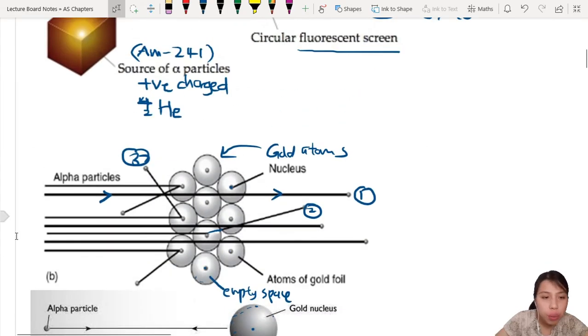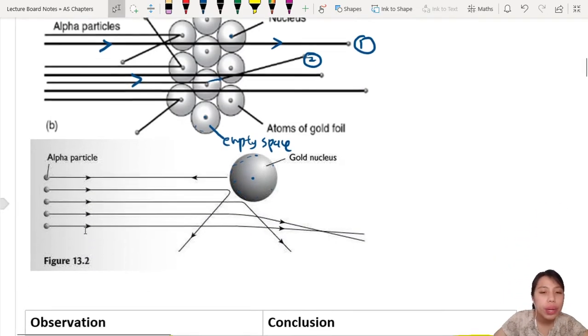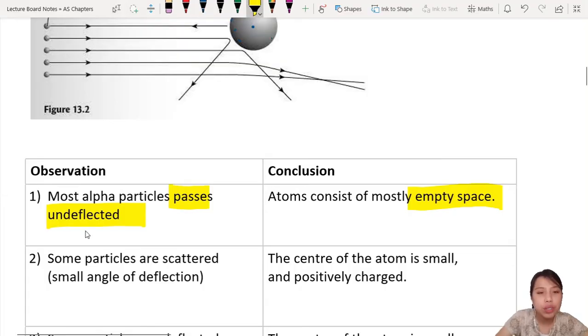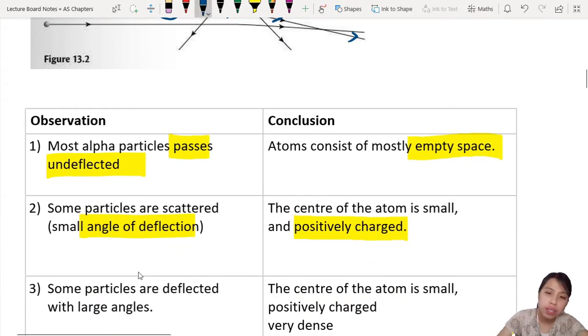Why do some alpha particles come in and deflect at an angle? They bend a little bit. That's because he came with the idea: this small angle of deflection is because the center of the atom is small but positively charged. If your alpha particle comes in, they're all positively charged, so you don't like the other positive charge, so it deflects. Like charges repel because of the electric field of that gold nucleus.